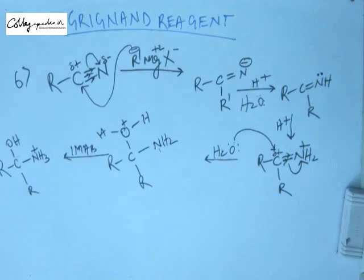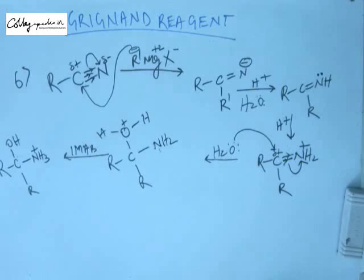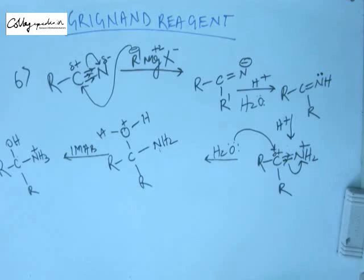Looking at NH3+, your senses must tell you that there is a good leaving group here about to leave. We have seen the list of good leaving groups and NH3 happens to be one of them. Ammonia is a small stable molecule that tries to leave the substrate because small stable molecules try to have their independent existence.